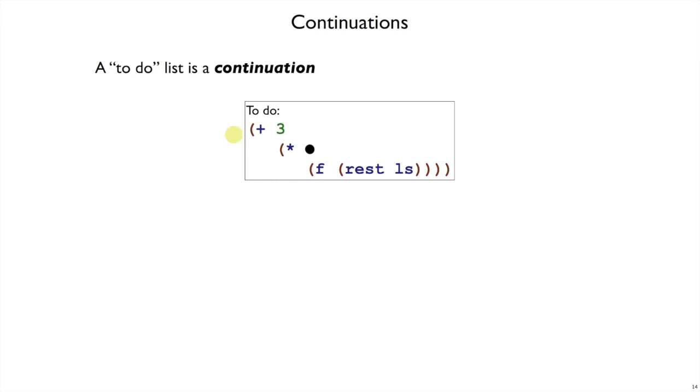Here's a bigger continuation. It says that once you get a value, then you need to work on this called f, and then multiply those, and once that's a value, then you need to add it to three. So this to-do entry can be an arbitrarily large expression wrapped around the part that we're currently trying to turn into a value.